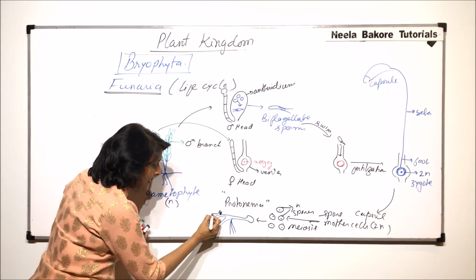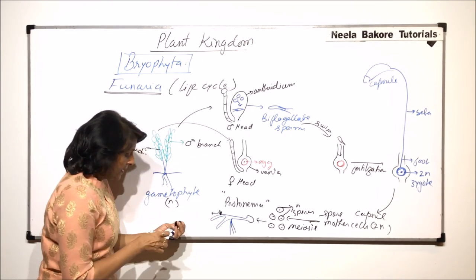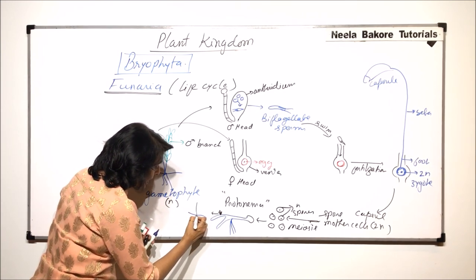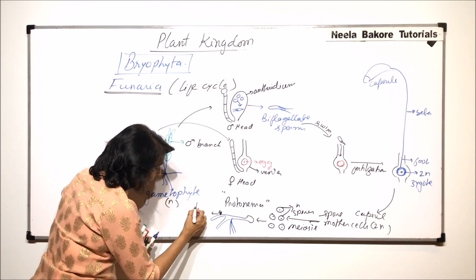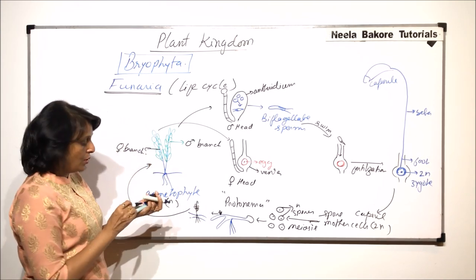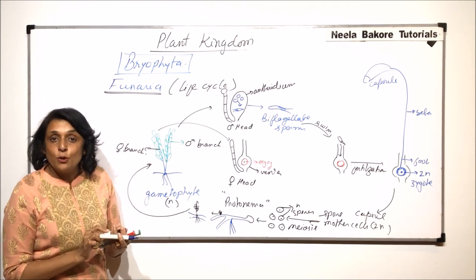So after it grows, this is the thread and we start seeing the rhizoids here and those leafy structures here. And this is what is going to change into this gametophyte. So this is how the complete life cycle is going to take place.